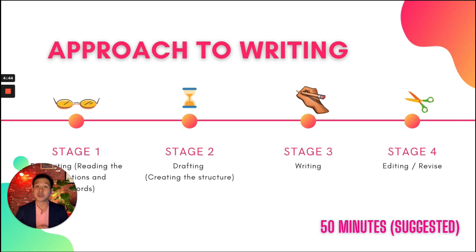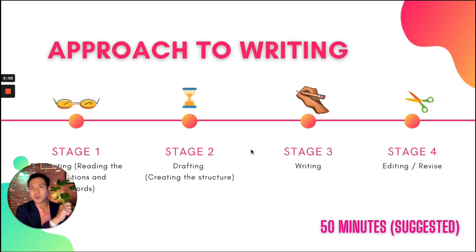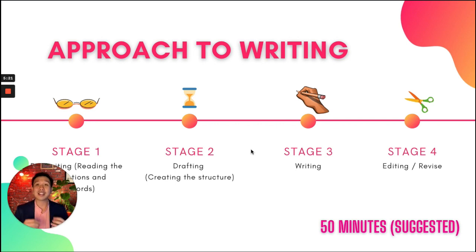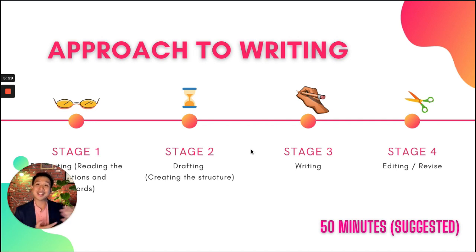Here is an approach to writing. Stage 1 is reading — make sure you read the question properly, analyse it, and bring your highlighter to highlight the important points. That's a very important tip. Stage 2 is drafting: create a structure, like a mind map or outline — whatever format suits your preference, whether it's a fishbone diagram or a simple list of points. Do your draft or outline before writing.